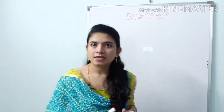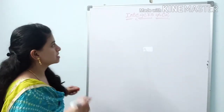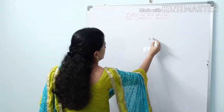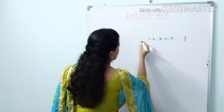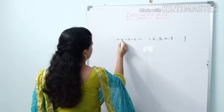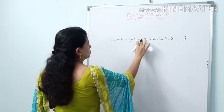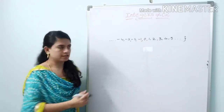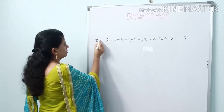In the previous class, we discussed the definition of integers. The set containing positive numbers — 1, 2, 3, 4, 5 and so on — and negative numbers — minus 1, minus 2, minus 3, minus 4 and so on — together with 0 is called the set of integers. It is denoted by capital Z or I.